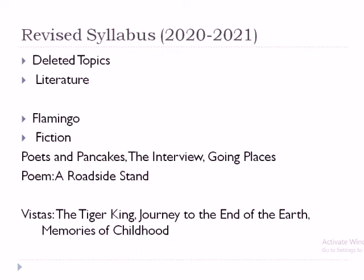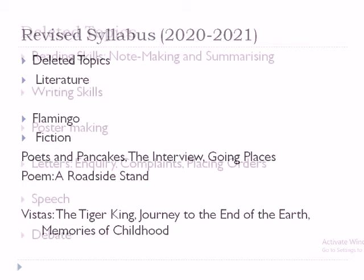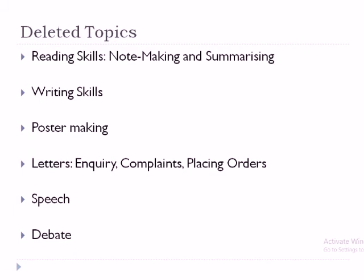From Vistas, the deletions also include Memories of Childhood. We had done Tiger King and Journey to the End of the Earth, but nothing ever goes to waste — Tiger King is related to poaching and Journey to the End of the Earth connects us with the issue of climate change, so it's going to help you somewhere or the other.